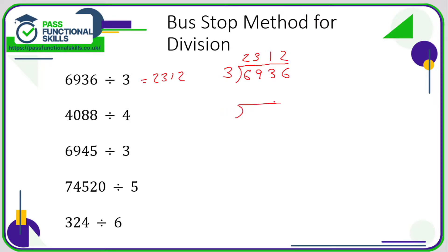The next example is slightly different, just because of the zero. 4088 goes inside the bus stop, four on the outside — that's what we're dividing by. 4 divided by 4 is 1. 0 divided by 4 is 0 — when you're dividing zero by anything, just put a zero on top. 8 divided by 4 is 2, 8 divided by 4 is 2. So the answer is 1022. When you encounter a zero, don't leave it blank — put in a zero.